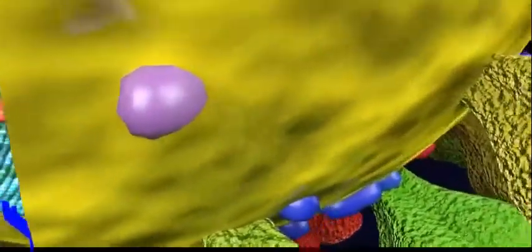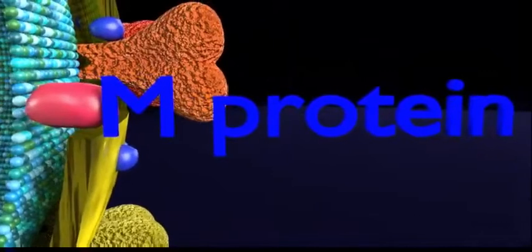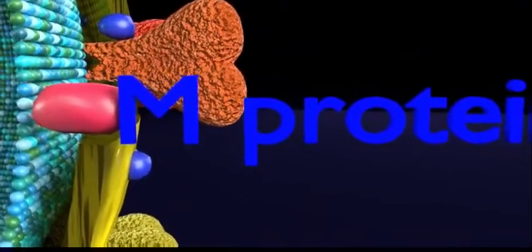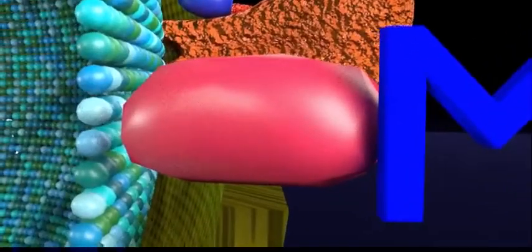The envelope layer here is seen in yellow color. There are four types of surface proteins. The M type refers to the membrane protein as seen here. It is the most abundant on the viral surface and defines the shape of the viral envelope.